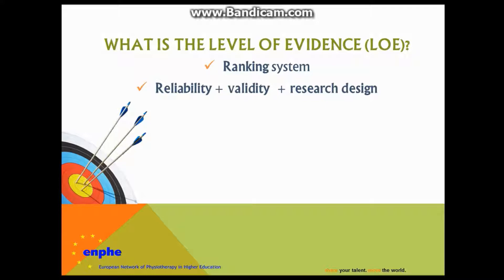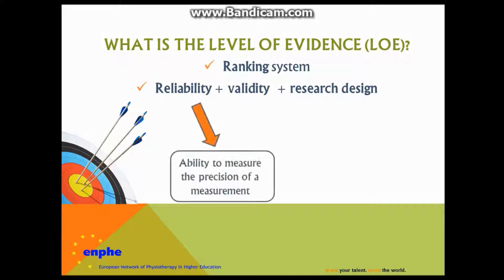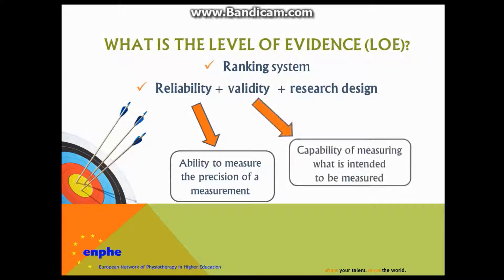The level of evidence depends on three characteristics: reliability, which is the ability to measure the precision of a measurement; validity, which is the capability of measuring what is intended to be measured; and the research design. Knowing these, we can determine which level of evidence a study is at.